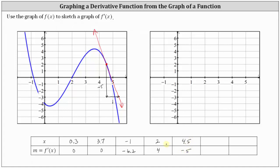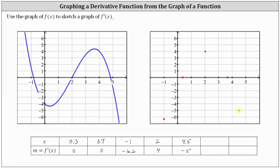Now we'll plot these five points and sketch the derivative function on the second coordinate plane. We have the point (0.3, 0), which is approximately here, and (3.7, 0), which is approximately here. Next, we have (−1, −6.2), which is here, and (2, 4), which is here. Finally, we have (4.5, −5), which is here. We know the graph of the derivative function must pass through these five points and look something like this.